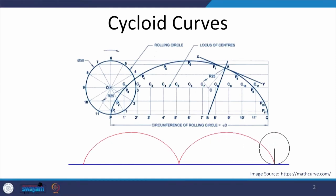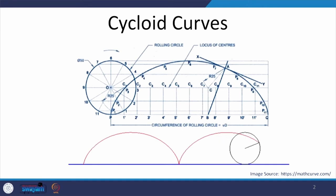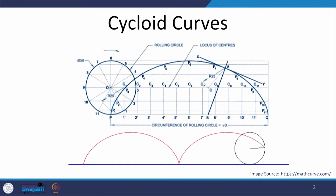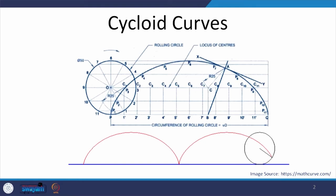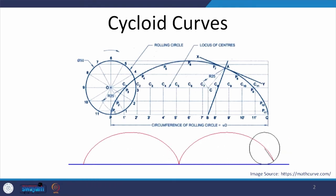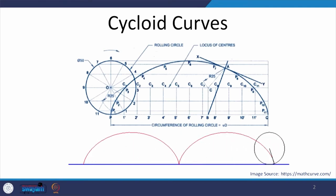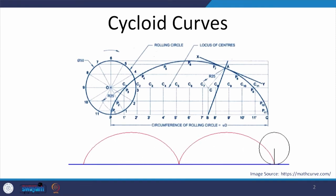What is the cycloid? Cycloid is actually the path traced by a point on the circumference of the circle as the circle rolls along a fixed straight path. What we are seeing here on screen is that there is a circle which moves in such a manner that it is moving along a straight line, and the path which is in red that we see is the path which is traced by a point which is on its circumference. This is a cycloid curve.